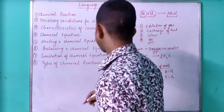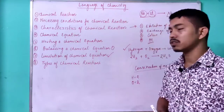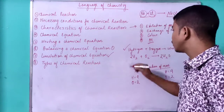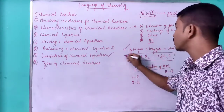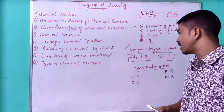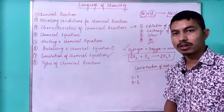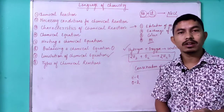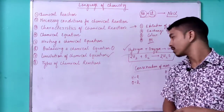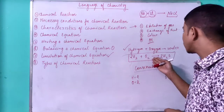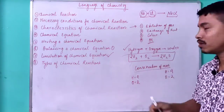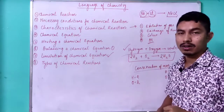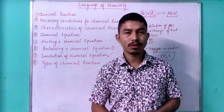Coming to the limitations of the chemical equation — limitations means the information that is not conveyed by the chemical equation. The first limitation is that when we look at a reaction we cannot tell which substance is a gas, which is a liquid, and which is a solid — it does not tell us about the state of the reactants and products. The second limitation is that it does not tell us about the time period — how long hydrogen takes to react with oxygen to produce water.